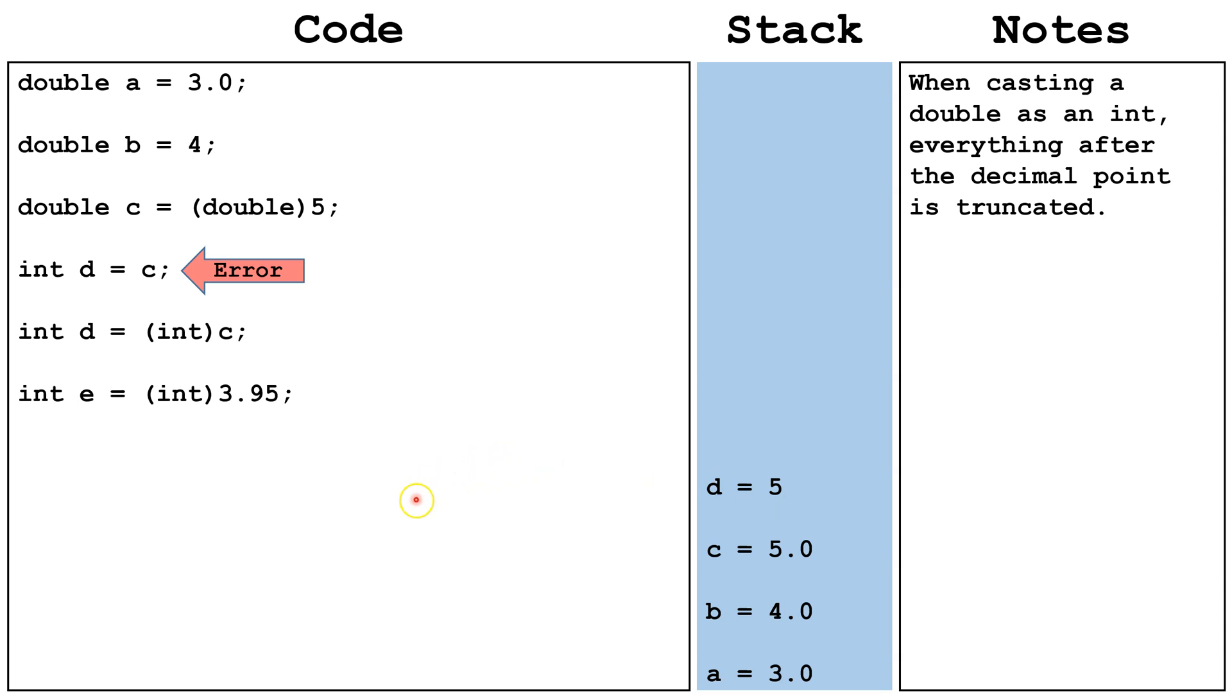Next, let's look at this example. We have int e, and we're casting 3.95 as an int. It's important to understand, when we cast a double as an int, we lose the entire decimal portion of the number. So we don't round, we truncate after the decimal point. Therefore, e will be set equal to the int 3.